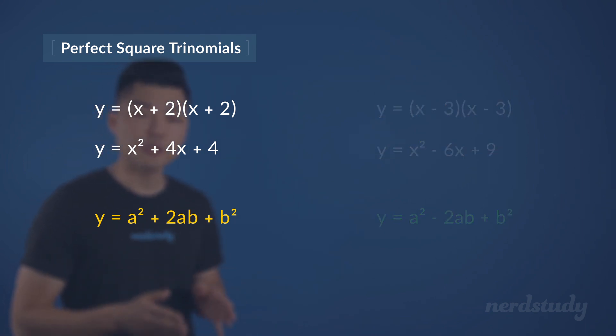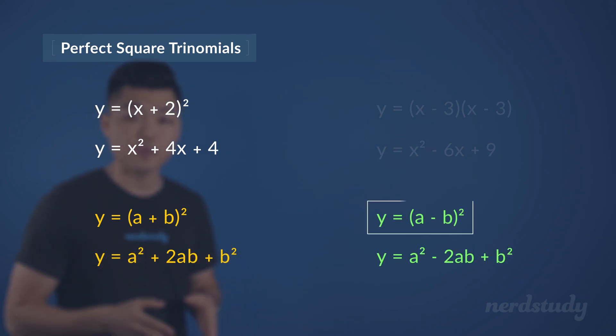In our first example, we can say that it's following the general form of y equals a plus b squared. What we end up with when we use FOIL to simplify this is this. Now, if the example wasn't in this format, but was rather in this format, then after using FOIL,